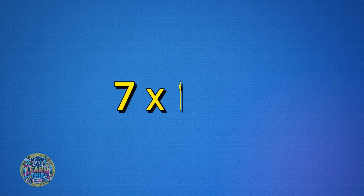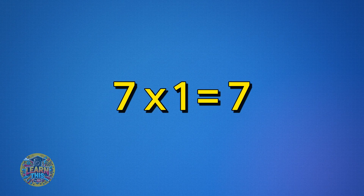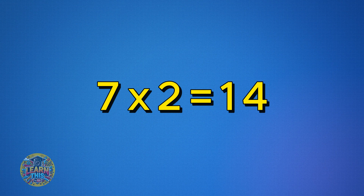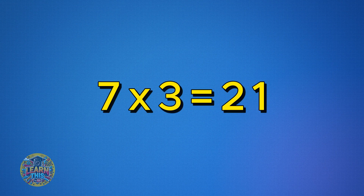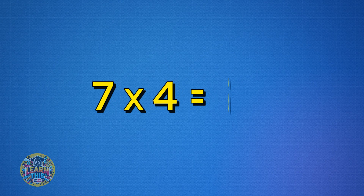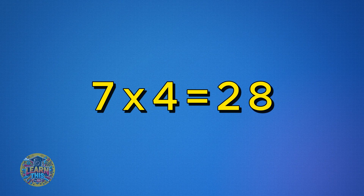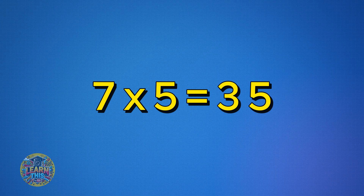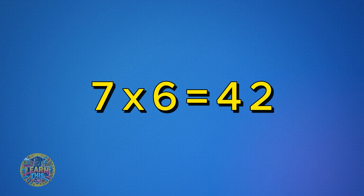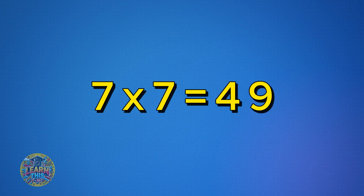Seven times one is seven. Seven times two is 14. Seven times three is 21. Seven times four is 28. Seven times five is 35. Seven times six is 42.